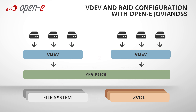If one of them fails completely, the whole ZPOOL is lost. To prevent it, we recommend creating many VDEV groups with fewer disks instead of one big group consisting of all the disks. This will decrease the usable storage capacity, but it will increase the safety of the data and improve the performance of your ZPOOL.